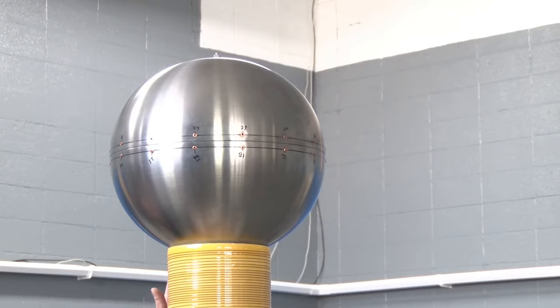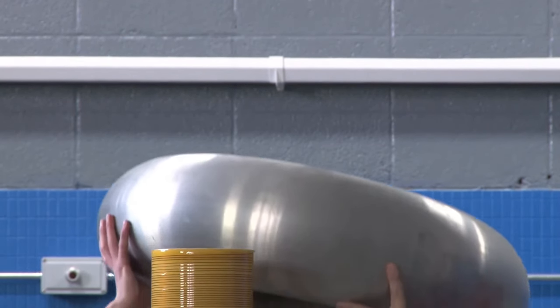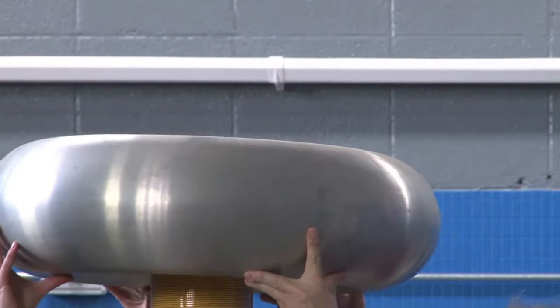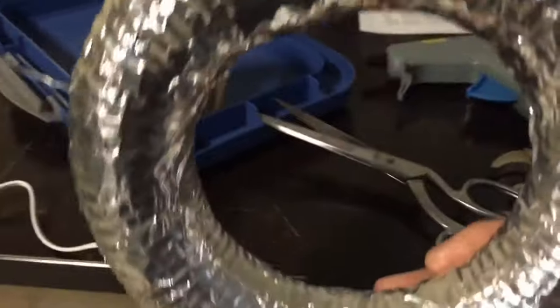The top of the secondary coil is usually connected to a metallic toroid or sphere, which has the effect of lowering the resonant frequency and allowing the voltage to climb to a higher value before breaking out. These so-called top loads are typically homemade using materials like old metal bowls, aluminum tape, or aluminum dryer ducting.